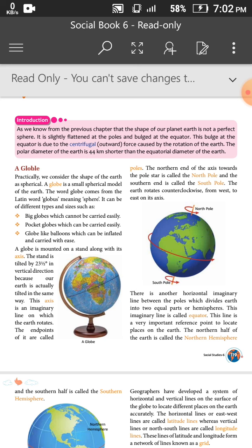Globes can be different types and sizes, such as big globes which cannot be carried easily, pocket globes which can be easily carried, or balloon-like globes which can be inflated and carried. We normally see these different sized globes in schools and colleges. The globe is mounted on a stand along with its axis.